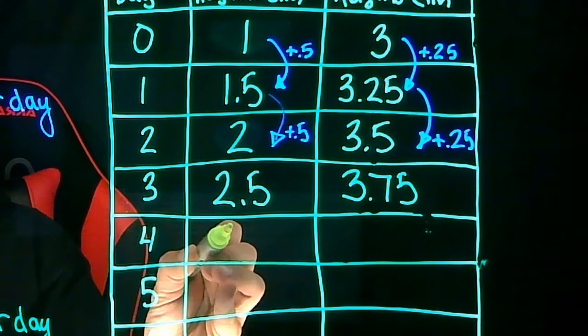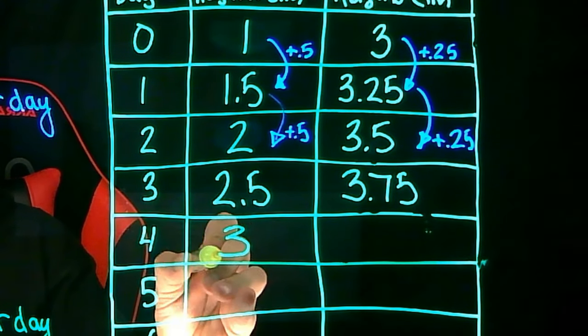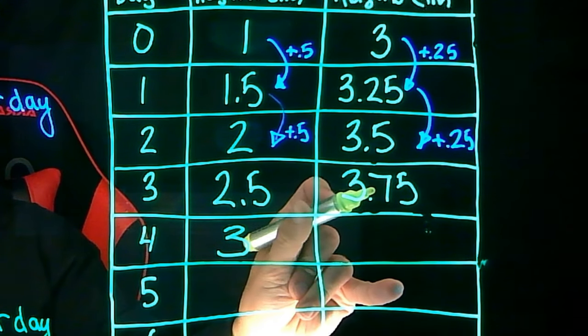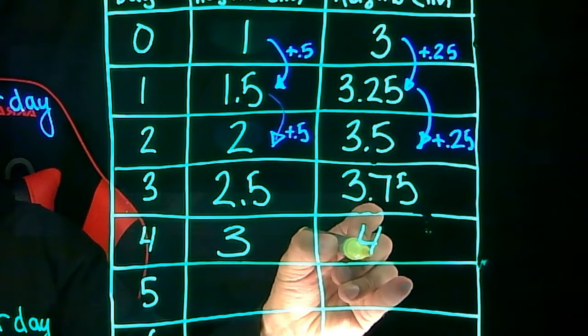On day four, plant A will have a height of 2.5 plus 0.5 or 3 inches tall. And plant B will have a height of 3.75 plus 0.25 or 4 inches tall.